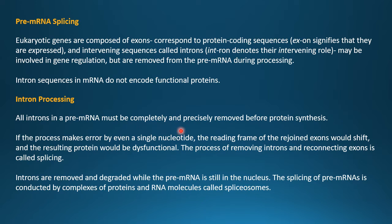All introns in the pre-mRNA must be completely and precisely removed before protein synthesis. If even a single nucleotide error is made, the reading frame in translation goes wrong: the reading frame of the rejoined exons will shift, and the resulting protein will be dysfunctional. The process of removing introns and reconnecting exons is called splicing. Introns are removed and degraded while the pre-mRNA is still in the nucleus.